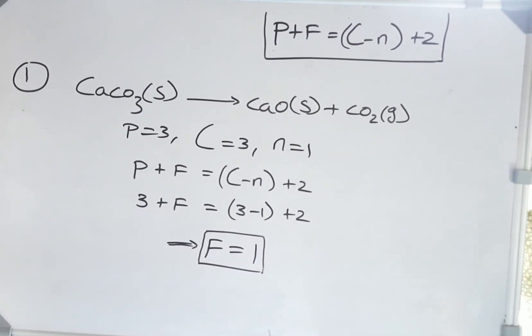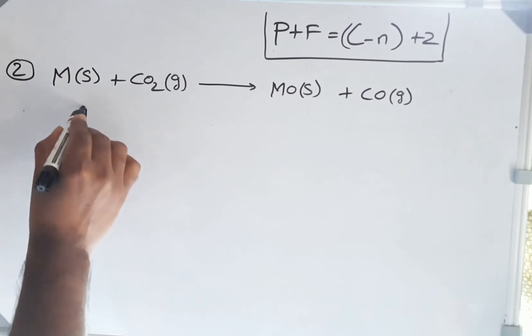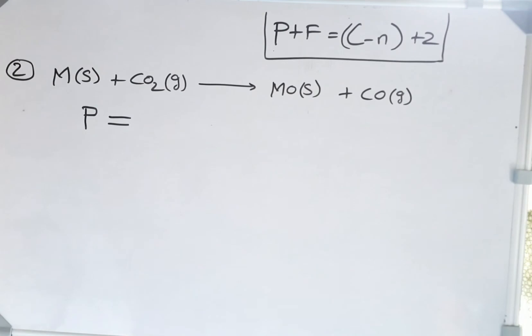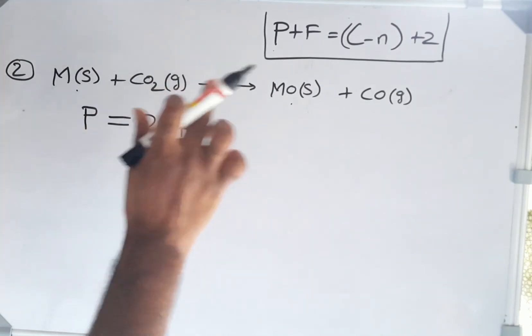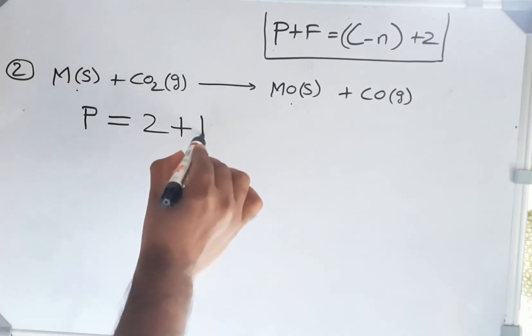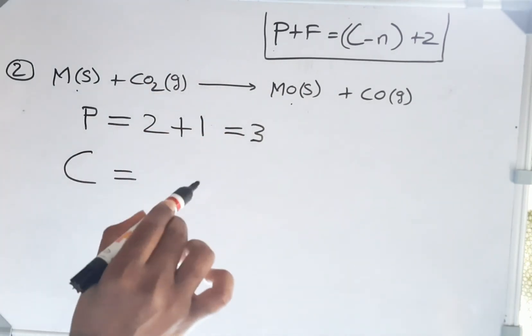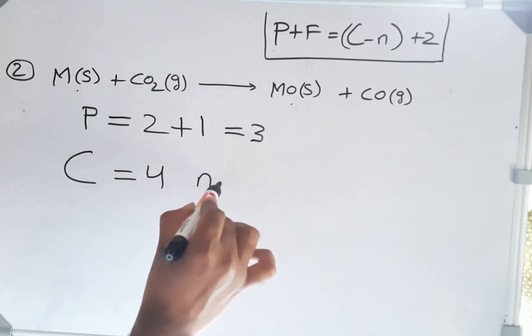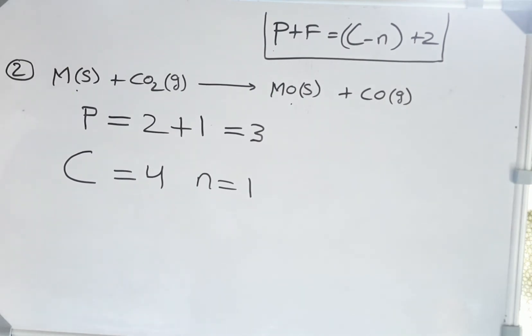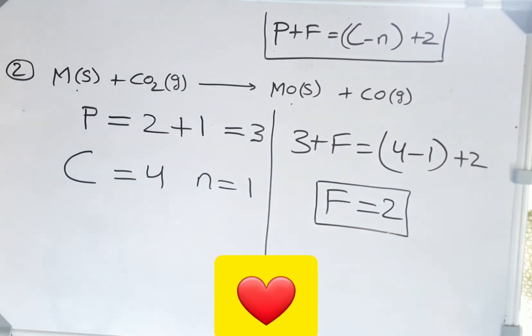Now let's discuss the second question. This is a very interesting question from Metallurgy GATE 2022. Just like the last problem, let's find the total number of phases. Looking at the points we discussed: total solids are 1 and 2, and total gases are 1 and 2. But remember, all gases are considered one phase, so total phases P = 3. Capital C is the total number of components: 1, 2, 3, 4. Total reactions n = 1. Substituting, we get F = 2. Thank you.